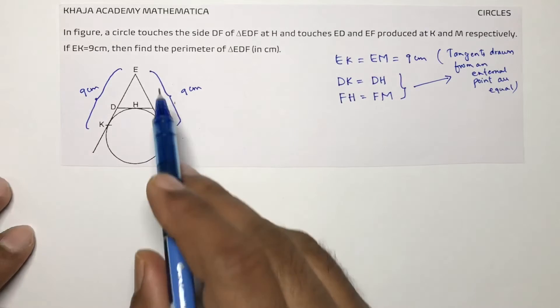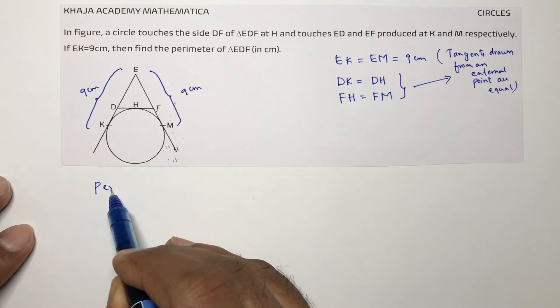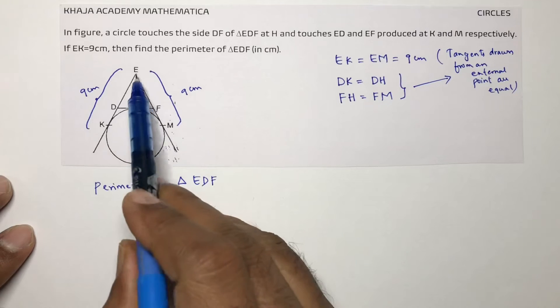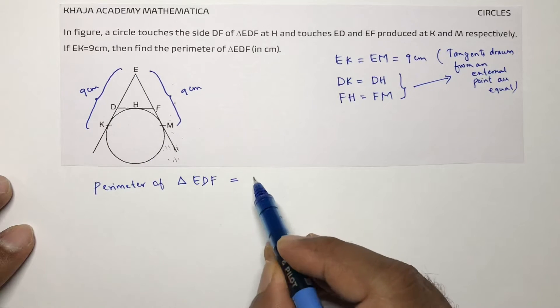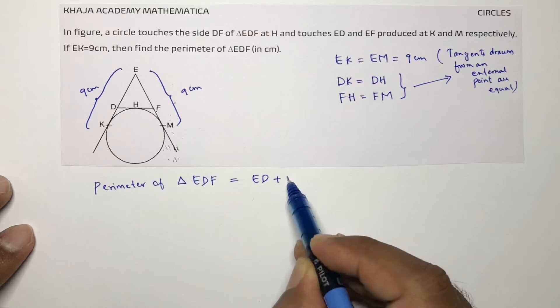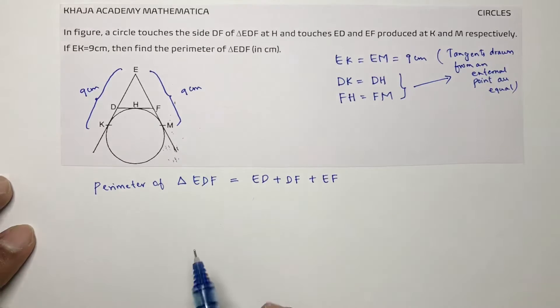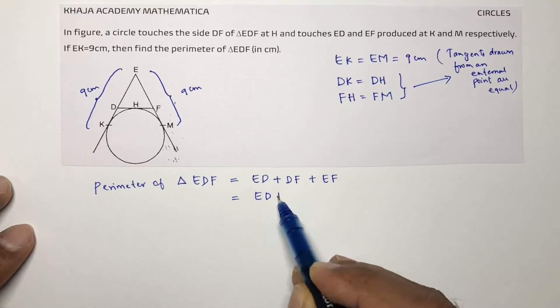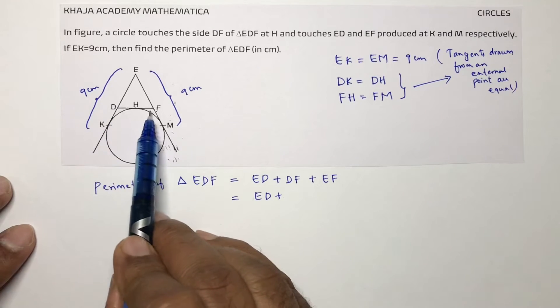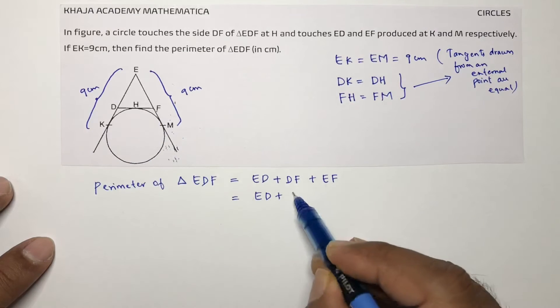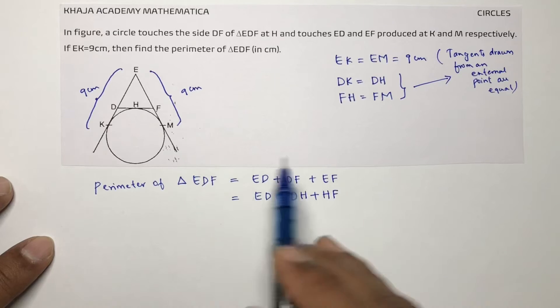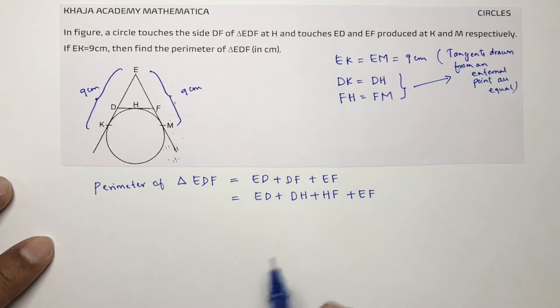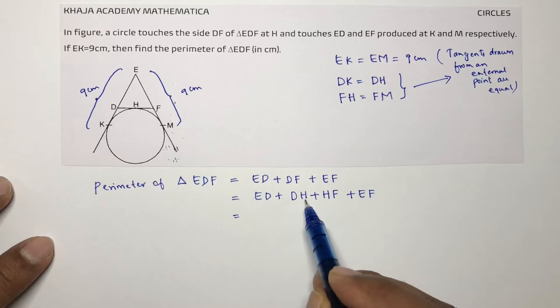Now we need to find the perimeter of triangle EDF, this triangle EDF. So what is perimeter? Sum of all the sides. So ED plus DF plus EF. Now here ED you can write as DH plus DF, you can write as DH plus HF.